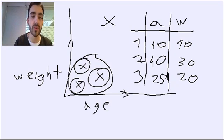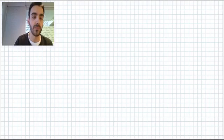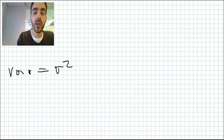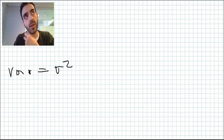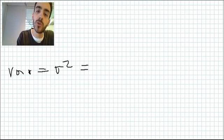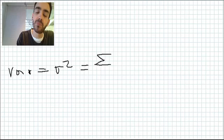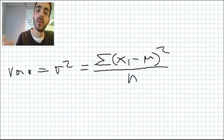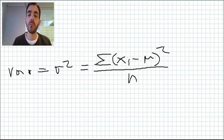How is this reflecting into the formula of the variance? If you go through the formula, variance equals sigma to the power of 2, which equals the sum of each data point minus the mean to the power of 2 divided by n.